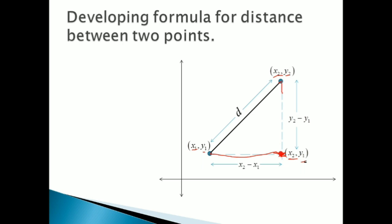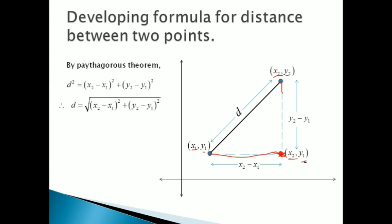अब अपने पास basically एक right angle triangle है, जिसकी तीनों sides मुझे पता हैं। तो apply Pythagoras theorem: hypotenuse is D, and two sides are (X2 − X1) and (Y2 − Y1)। By Pythagoras: D² = (X2 − X1)² + (Y2 − Y1)²। Taking square root on both sides, distance D = √[(X2 − X1)² + (Y2 − Y1)²]. That is the distance formula। हमने सिर्फ वो चार properties जो याद रखने के लिए बोला था, उसी का use करके distance formula को derive किया — and of course Pythagoras theorem।